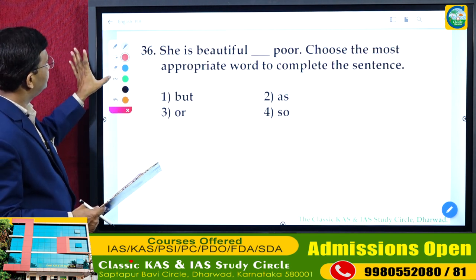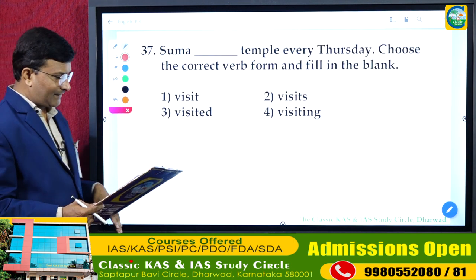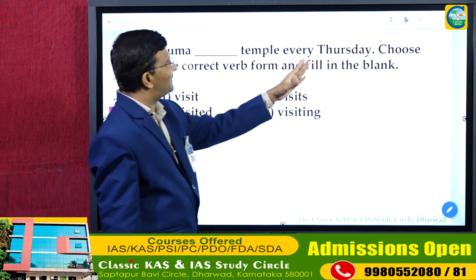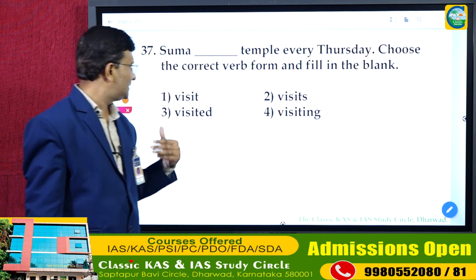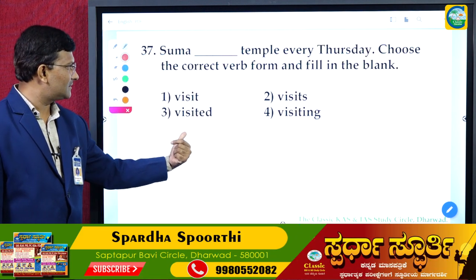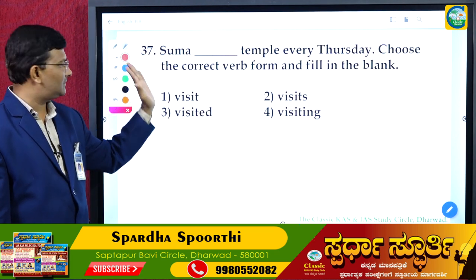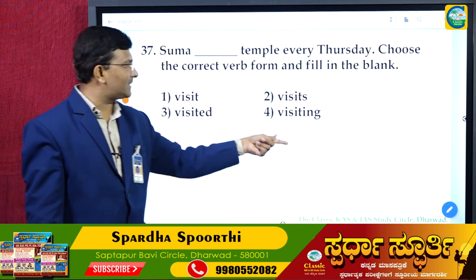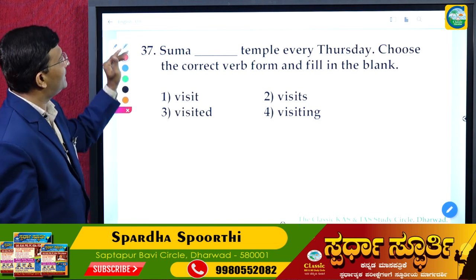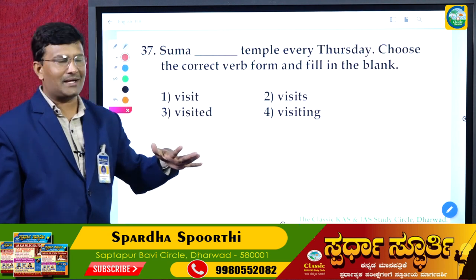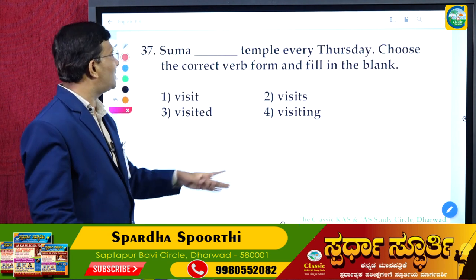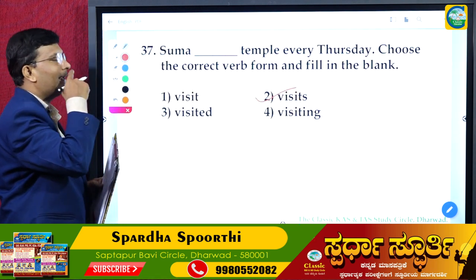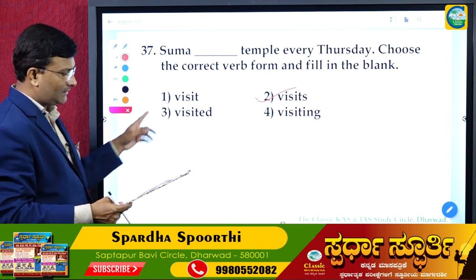Question 37: 'Suma ___ temple every Thursday.' Choose the correct word to fill in the blank — visited, has visited, visiting, or visits. It is not continuous and not past. Since every Thursday is a habitual action, simple present tense applies. The answer is 'visits' — 'Suma visits temple every Thursday.'